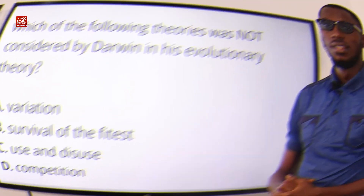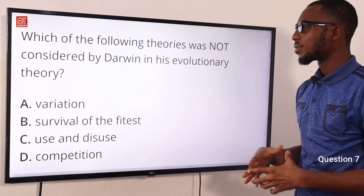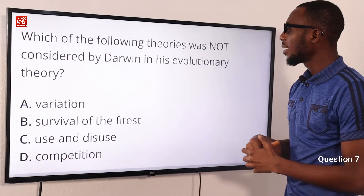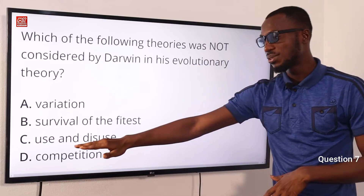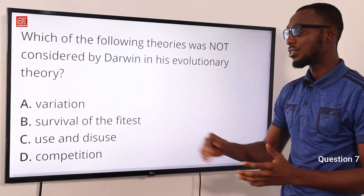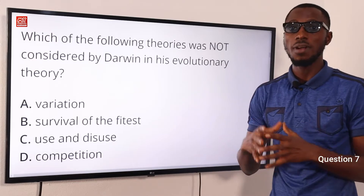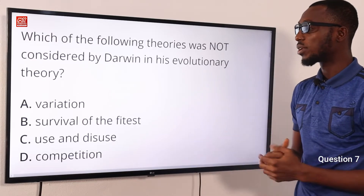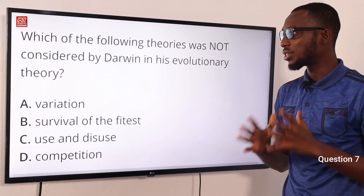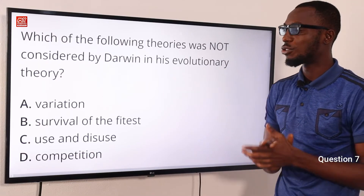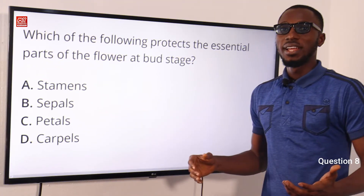Question 7: Which of the following theories was not considered by Darwin in his evolutionary theory? What Darwin did not consider is use and disuse — this was considered by Jean Lamarck. Another thing Lamarck considered is inheritance of acquired traits. The correct option is C: use and disuse was considered by Jean Lamarck, not Charles Darwin.